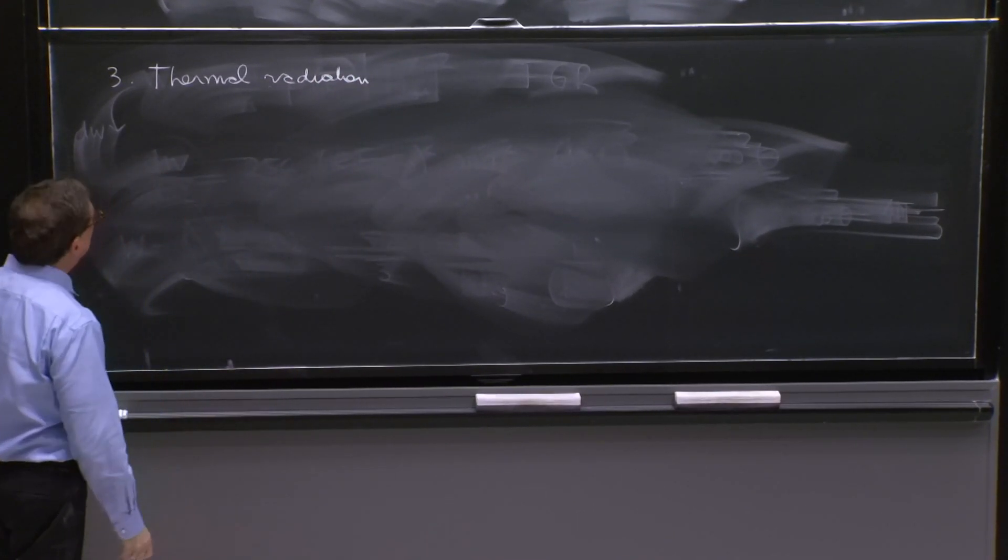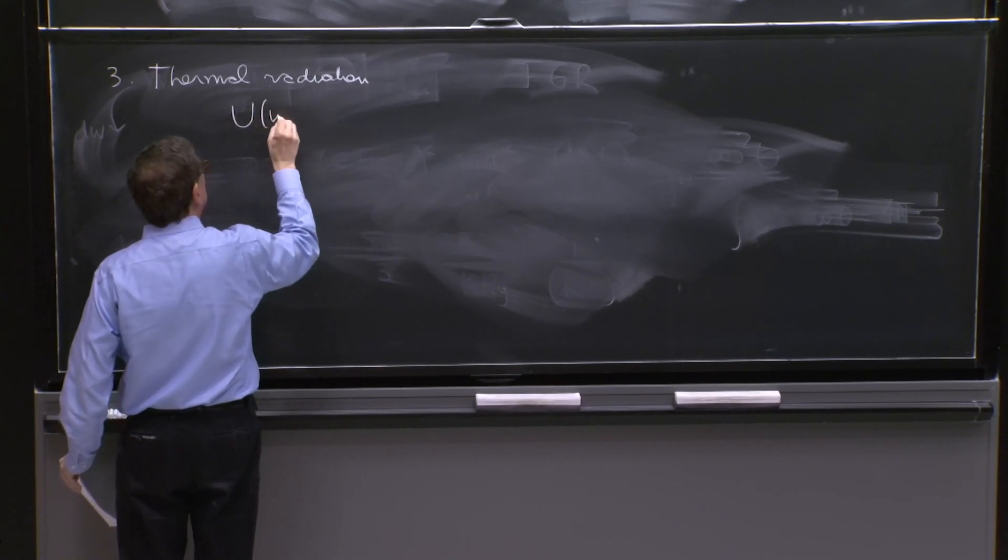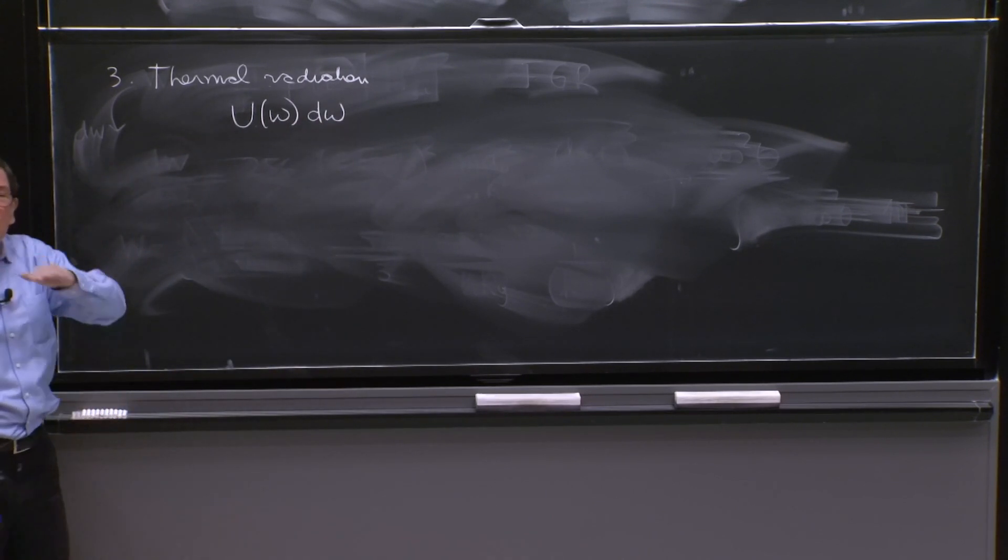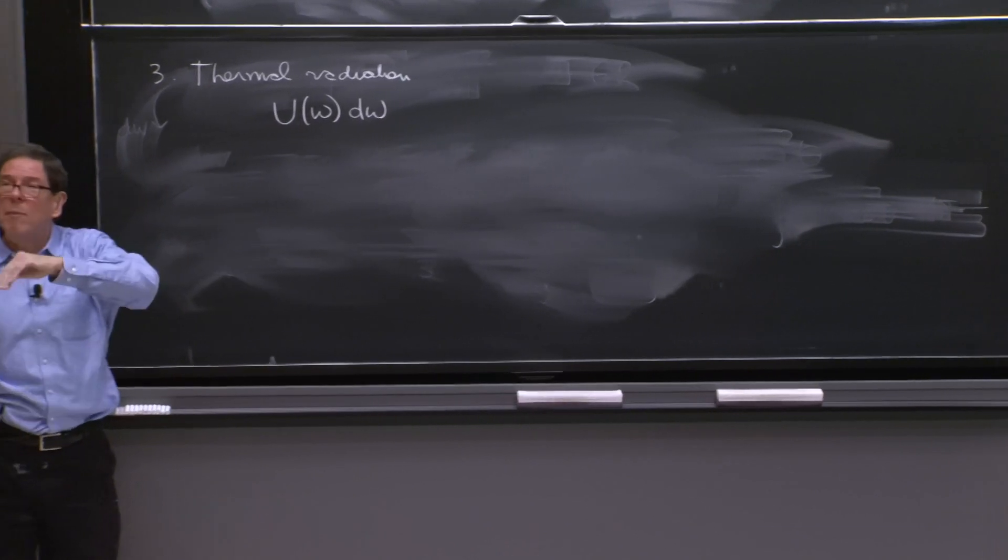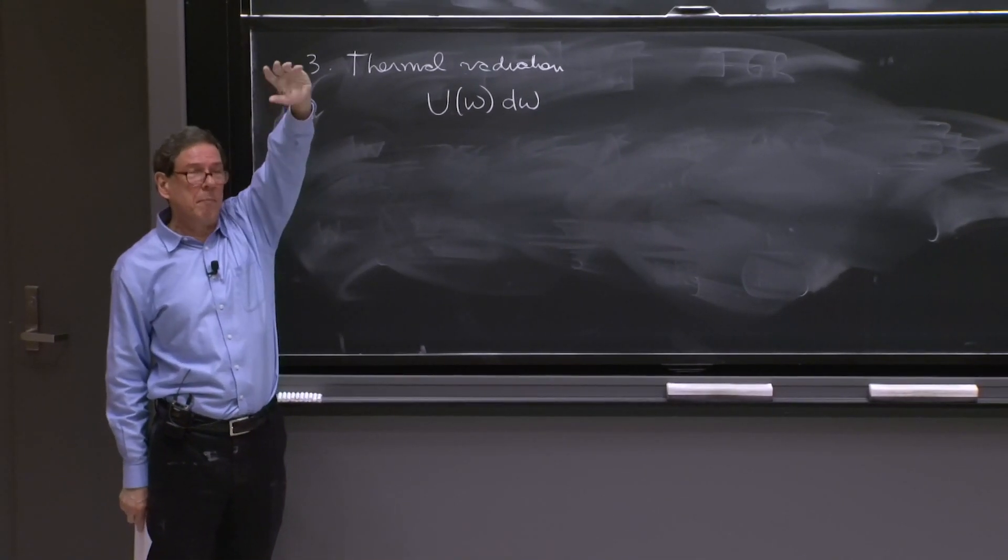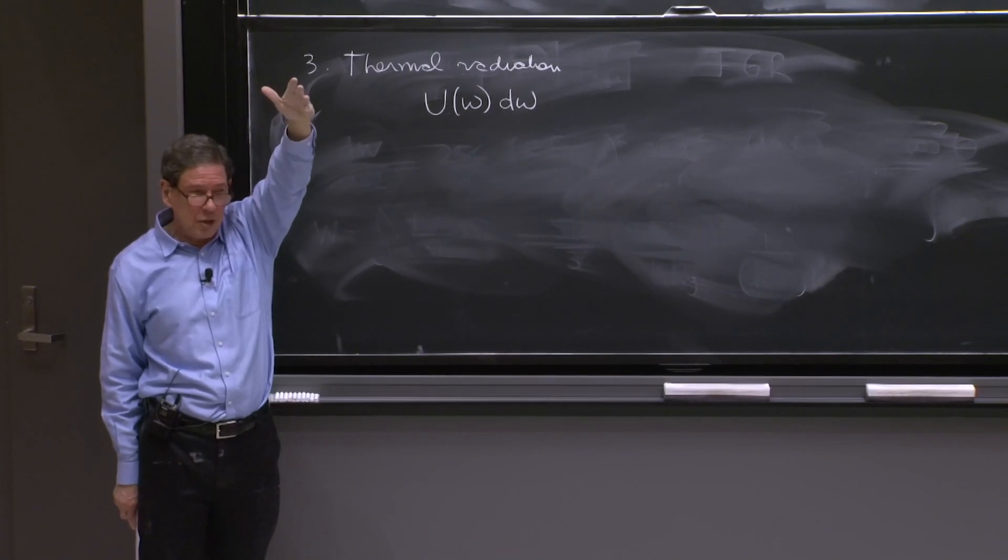And the way one describes this is in terms of function u of omega d omega. In the black body of radiation, there are at a given temperature photons with very little energy. There are some largest number of photons with some energy associated with a temperature, and then it decays.